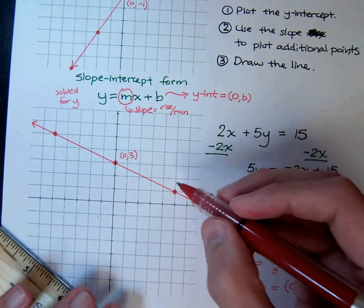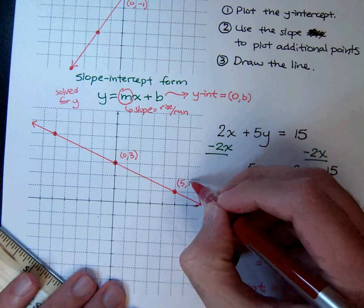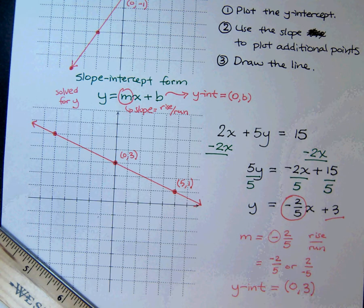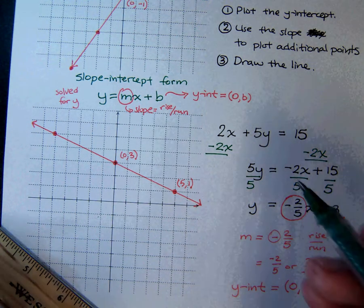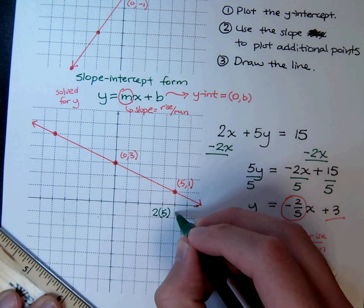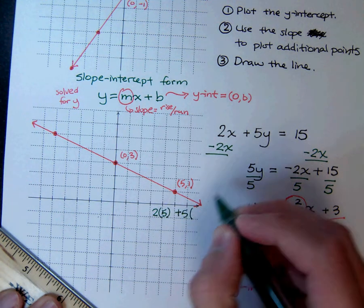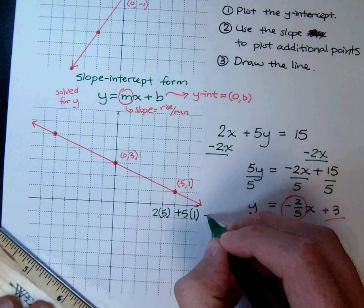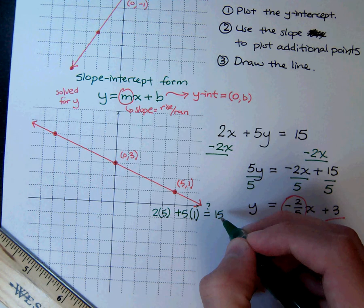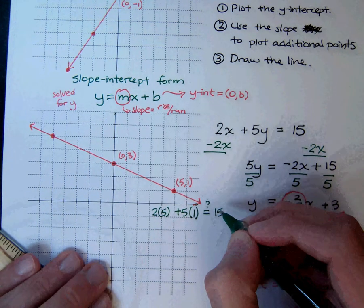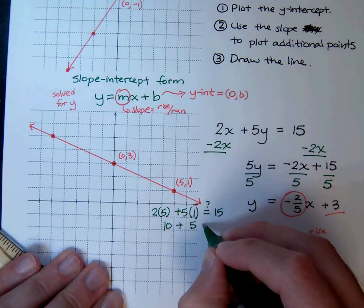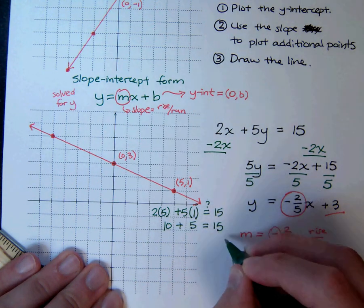And you can check this. The coordinates for this point would be 5, positive 1. And when you check that here, it should all work out. So let's do that real quick. If I plug the 5 in here, so it means 2 times 5 plus 5 times my y, which is 1. I want to see, does that equal 15? And it's pretty simple to see. We're going to have 10 plus 5, and that, of course, does equal 15. So it checks out.